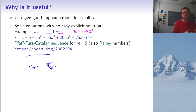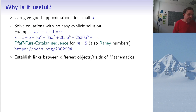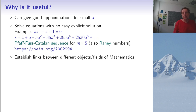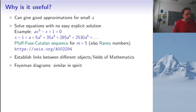This works for any integer, giving a general formula for equations of the form ax-to-the-n minus x plus one equals zero, and it can be adapted to more complicated equations. Finally, it gives links between different mathematical objects: Catalan numbers count binary trees, Dyck words and paths, triangulations of polygons, and more. Such connections between objects are often very useful in mathematics.